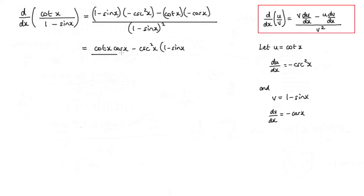And again, that is all over v squared, so 1 minus sin x all squared.